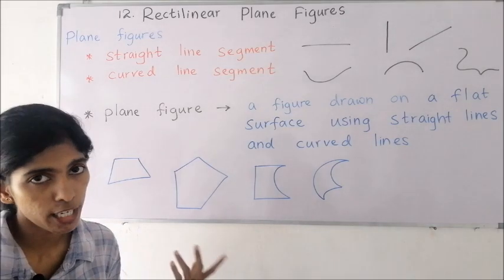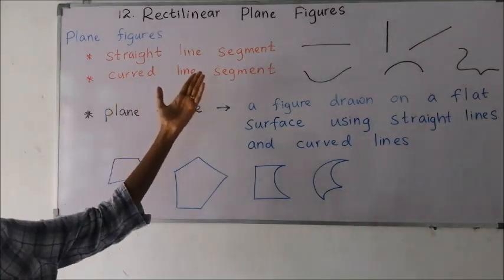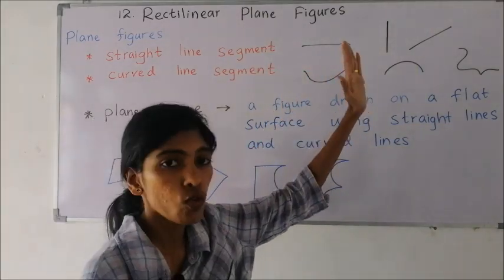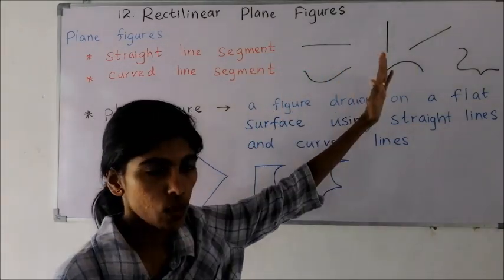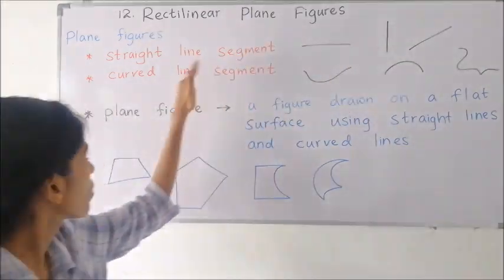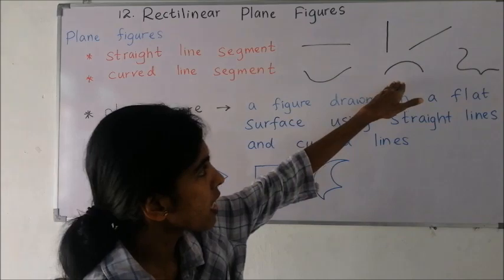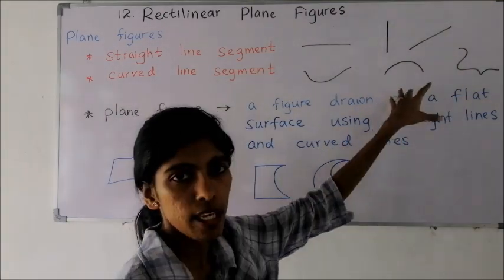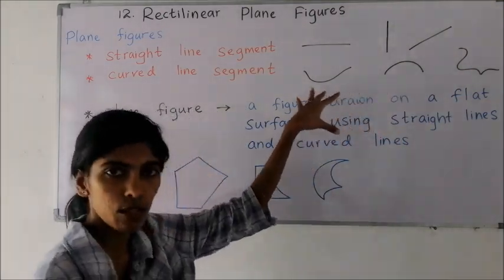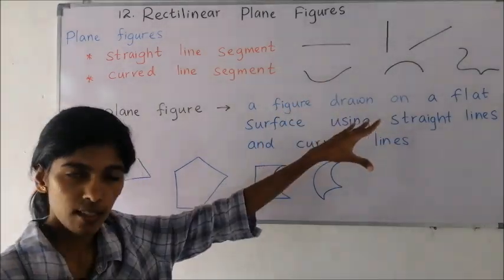You can identify straight line segments — see, these three are the examples for straight lines. They don't have any curved shape. Then, what are curved line segments? See, these three are the examples for curved line segments. We can see small curves in these lines.